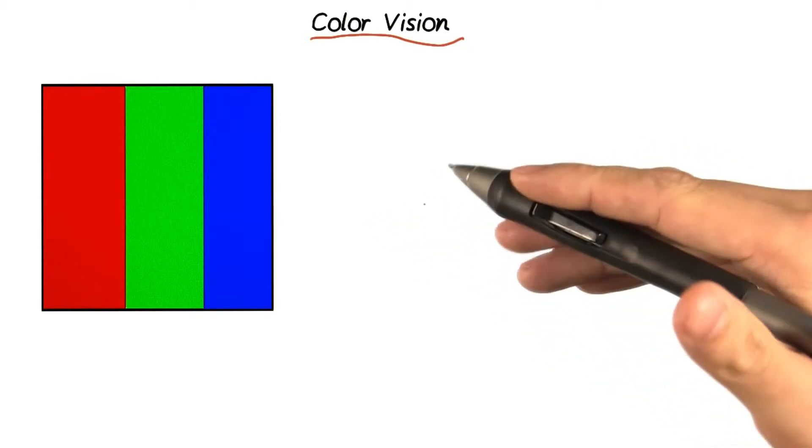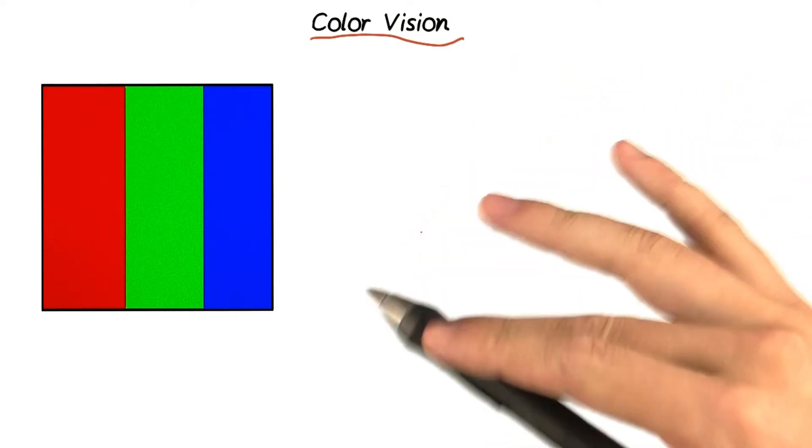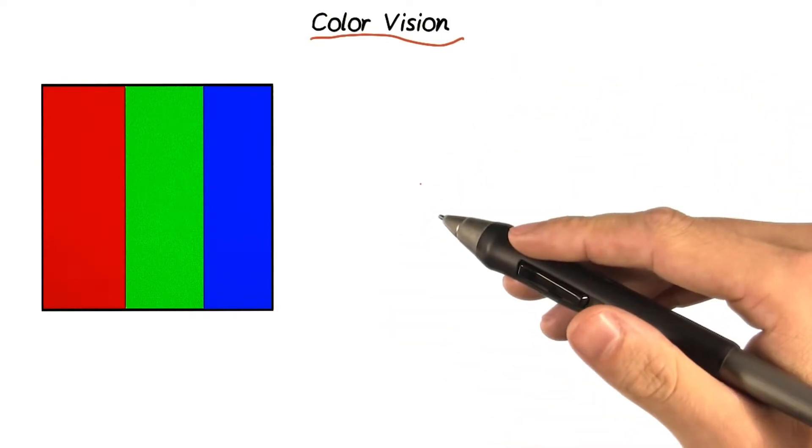This works because the human eye isn't as good at distinguishing colors as you might think. Our eyes can't actually tell the exact energy of an incoming photon.